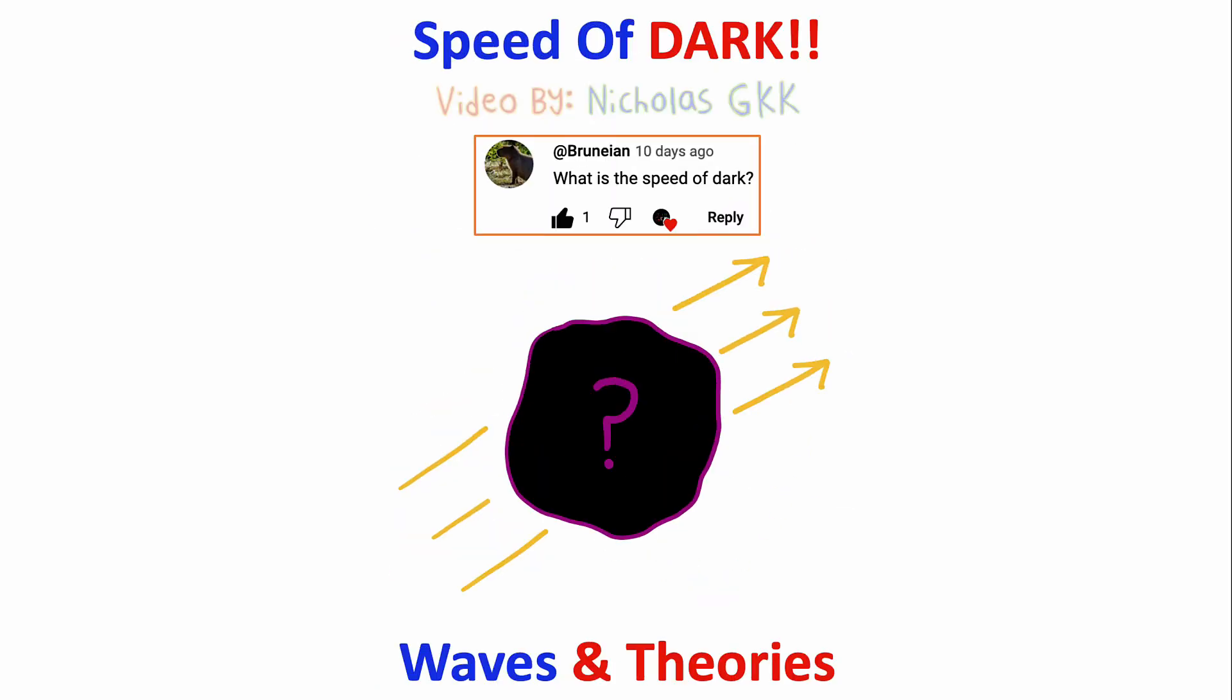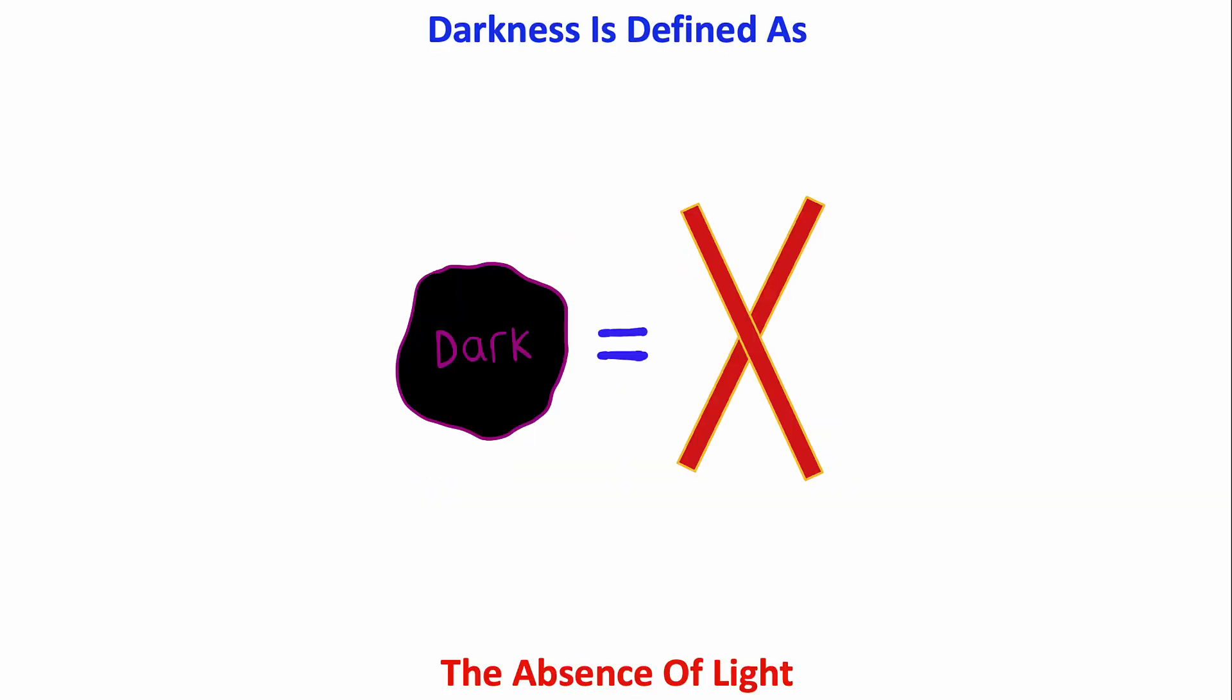What is the speed of dark? I mean, we know darkness has to be faster than light since darkness was there before light, right? Well, not exactly because see, darkness is defined as the absence of light.